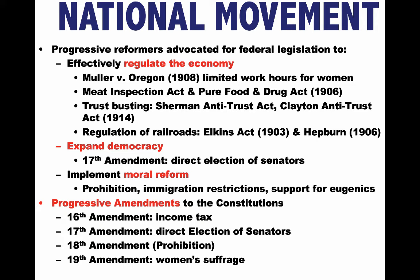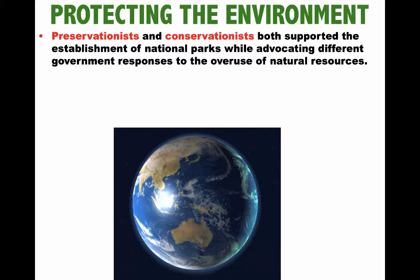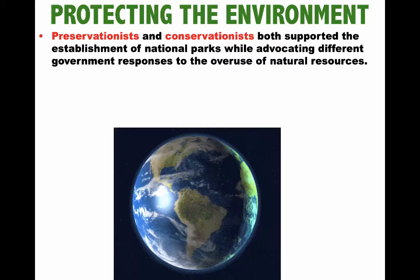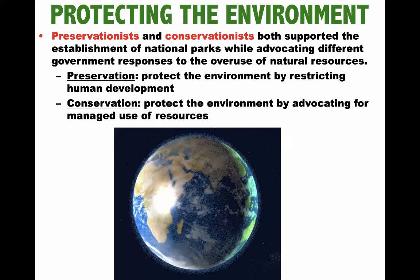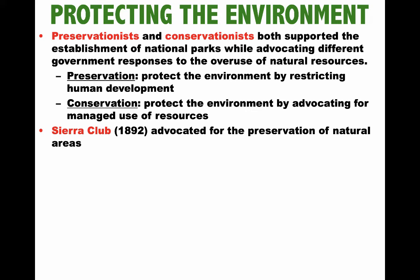For the first time, there were also efforts by the government to protect the environment. Preservationists and conservationists both supported the establishment of national parks, while advocating different responses to the overuse of natural resources. Preservationists advocated protecting the environment by restricting human development, whereas conservationists advocated protecting the environment through managed use of resources. Even before the Progressive Movement, the Sierra Club had been around since 1892, advocating for the preservation of natural areas — John Muir was their leader.